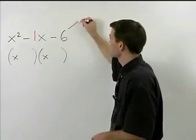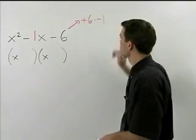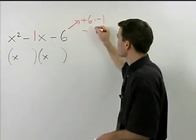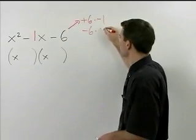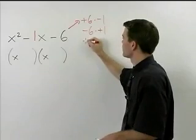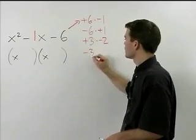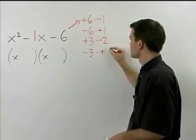Negative 6 can be thought of as positive 6 times negative 1 or negative 6 times positive 1, can also be thought of as positive 3 times negative 2 or negative 3 times positive 2.